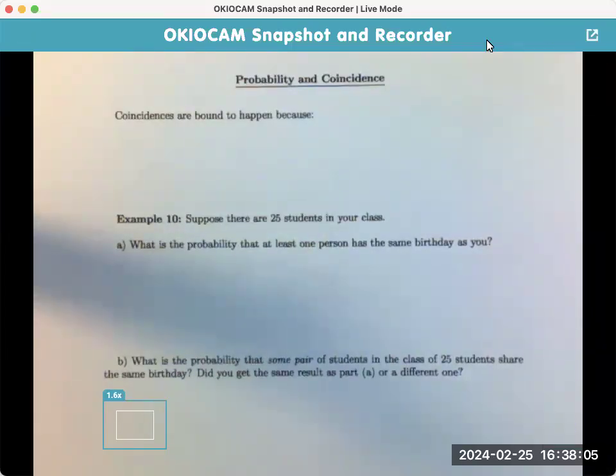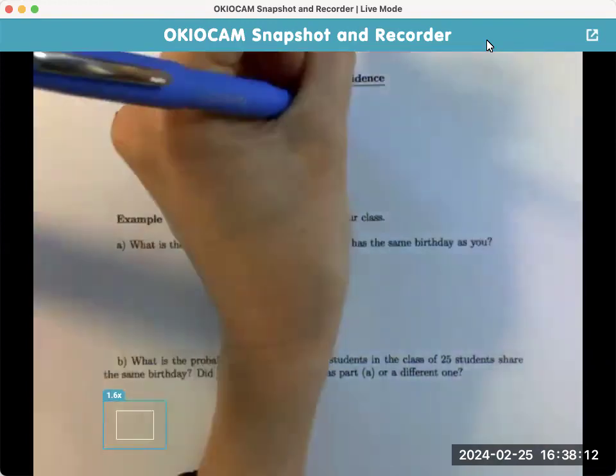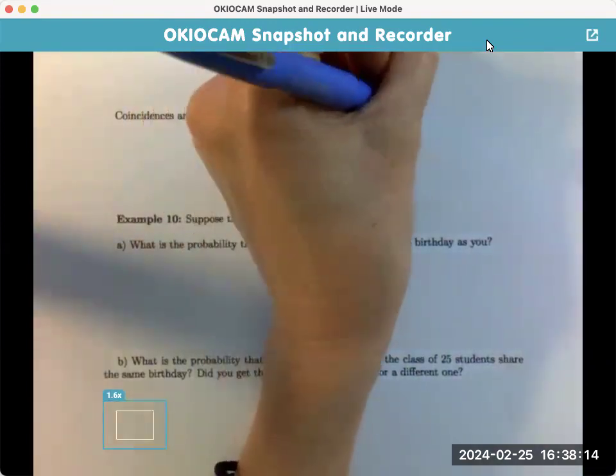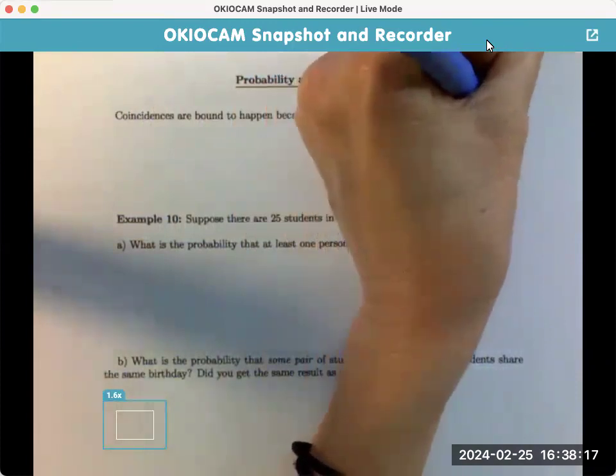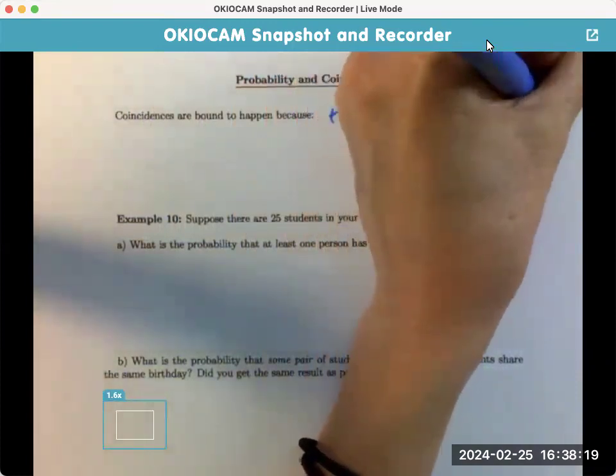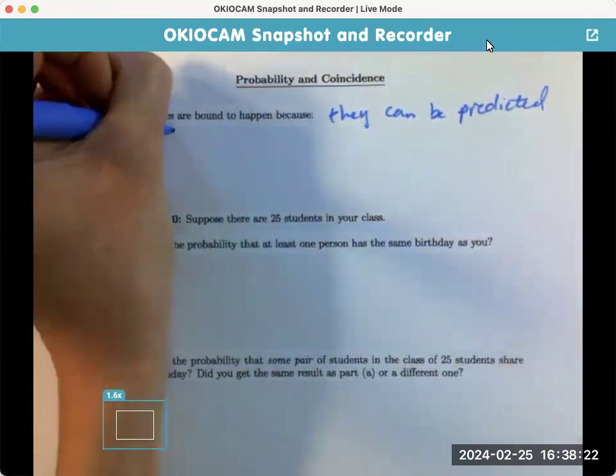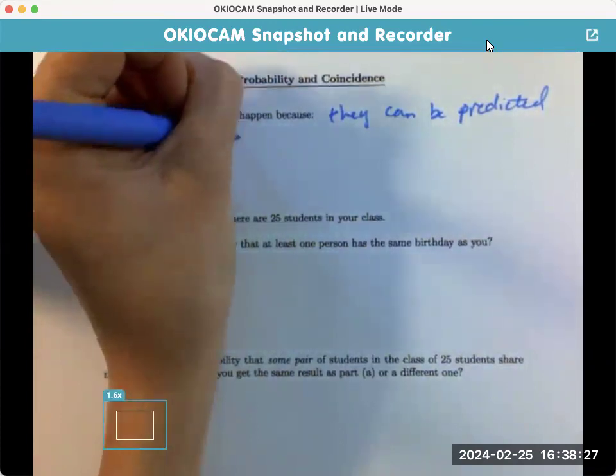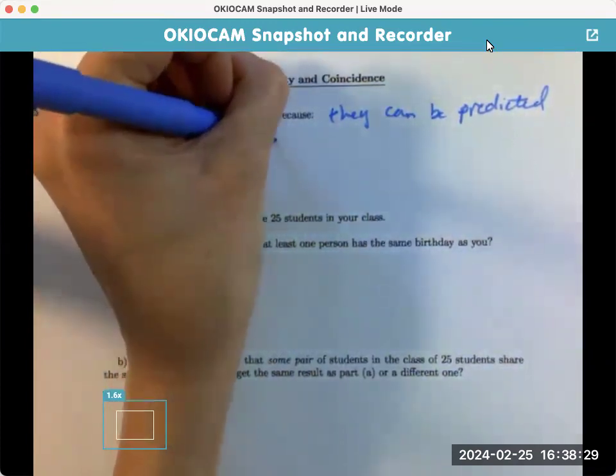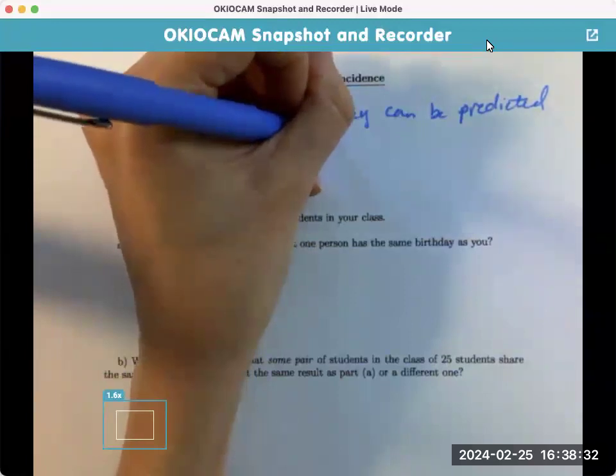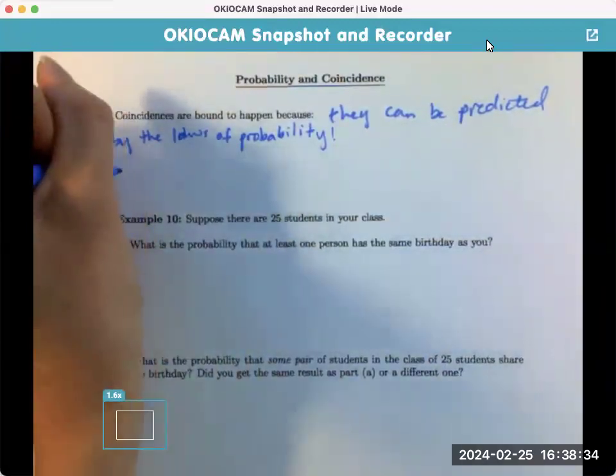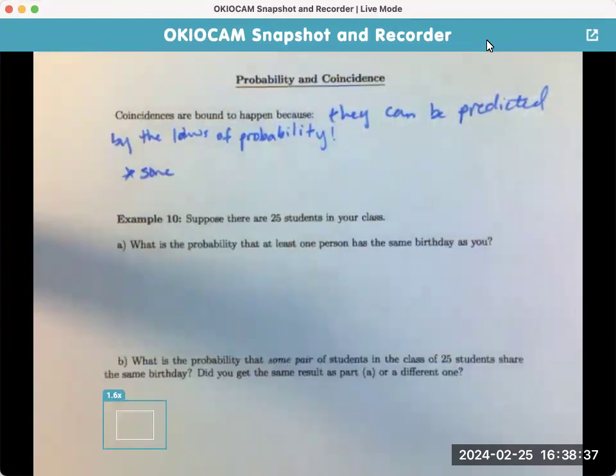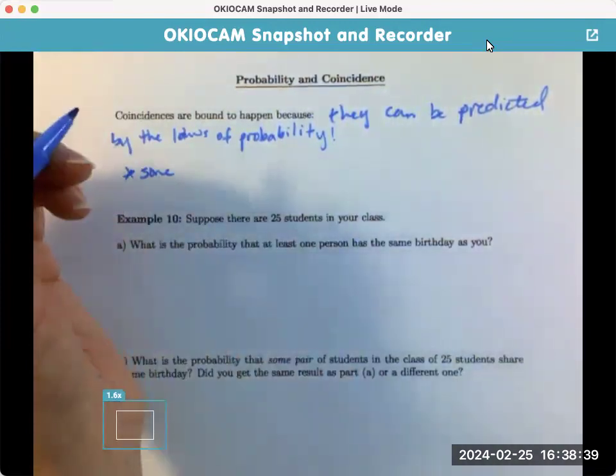And we're back. Okay, last page. Coincidences are bound to happen because they can be predicted by the laws of probability. Isn't that cool? So, some similar coincidence may be extremely likely or even certain.